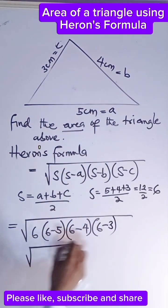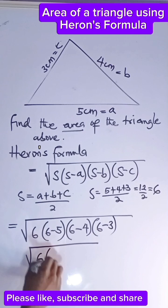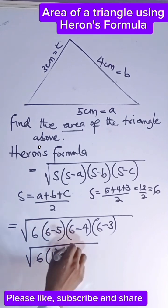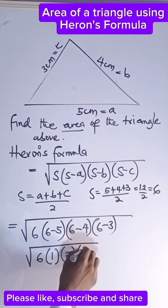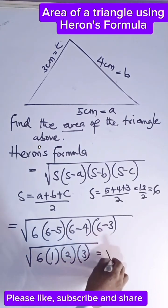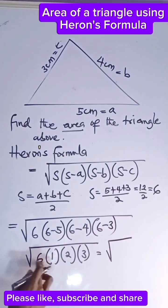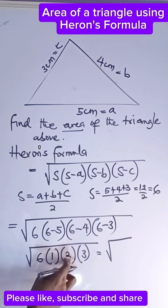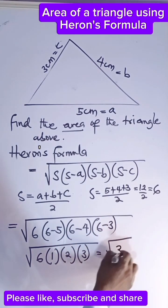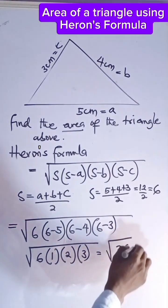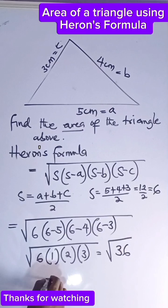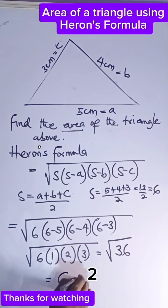So this is going to give us 6 times 1, then 2, then 3. And that is the square root of 6 times 1 is 6, times 2 is 12, times 3 is 36. So the square root of 36 is 6, therefore the area of this triangle is 6.